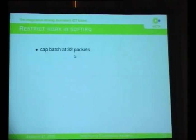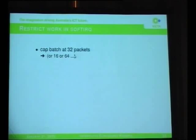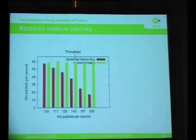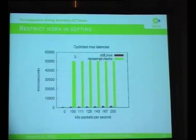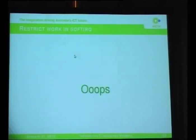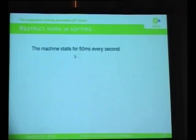So what we're going to try is restricting artificially the amount of work you can do in soft IRQ and then have an explicit preemption point. We chose 32 packets, though you could choose 16 or 64 - we ran it at 64 as well with very little difference in throughput. Now we're getting close to 60 kilopackets per second regardless of the packet arrival rate. That's really nice.